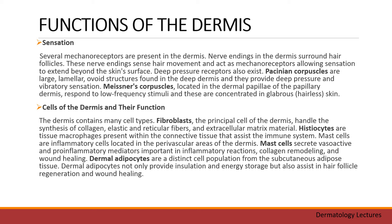The dermis contains many cell types. Fibroblasts, the principal cell of the dermis, handle the synthesis of collagen, elastic, and reticular fibers and extracellular matrix material. Histiocytes, or tissue macrophages, are present within the connective tissue and assist the immune system. Mast cells are inflammatory cells located in the perivascular area of the dermis, secreting vasoactive and pro-inflammatory mediators important in inflammatory reactions, collagen remodeling, and wound healing. Dermal adipocytes are a distinct cell population from the subcutaneous adipose tissue; they provide insulation and energy storage, but also assist in hair follicle regeneration and wound healing.